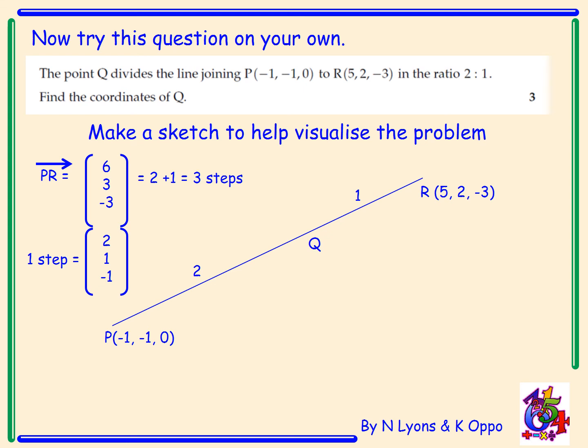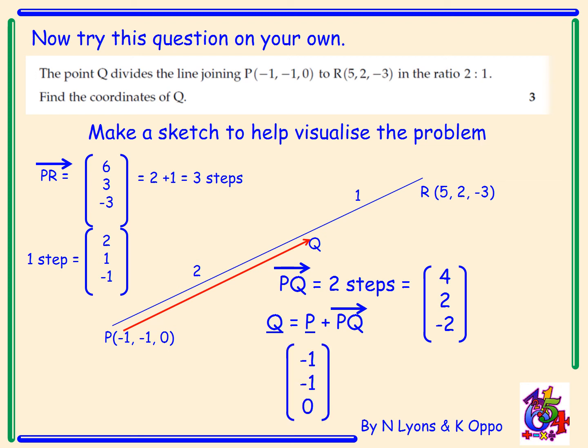But to get from P to Q, there's two steps. So the vector PQ equals two steps, which equals (4, 2, -2). But I want to find out what the coordinates of Q are. So if I start at P, I add on the vector PQ. That's (-1, -1, 0), the position vector at P. Add on the vector (4, 2, -2). And that gives me the position vector of Q equals (3, 1, -2). Again, the question asked me for the coordinates. So you have to write down the coordinates are (3, 1, -2). So well done. That's you've got three marks in the exam.